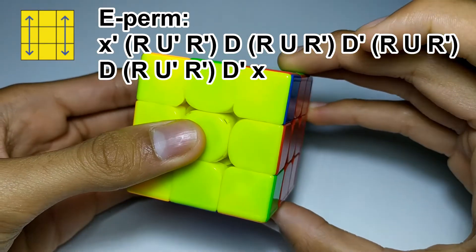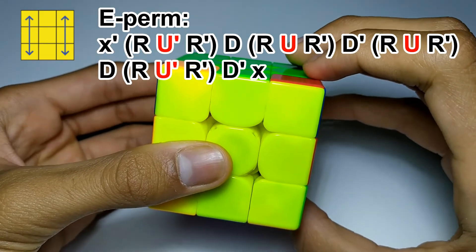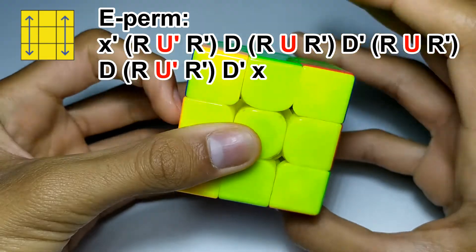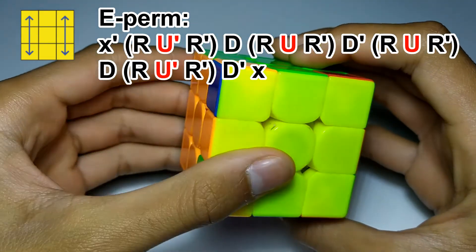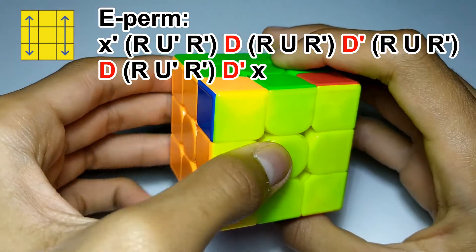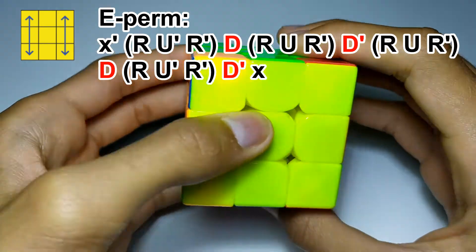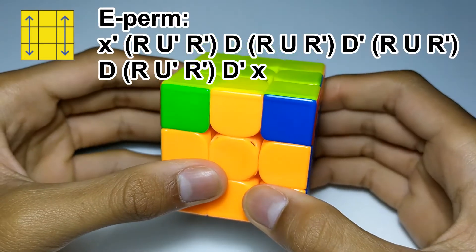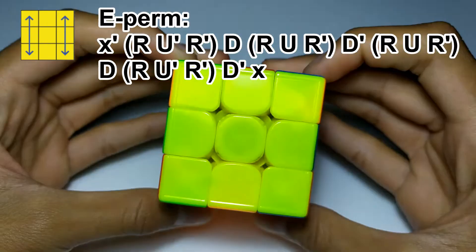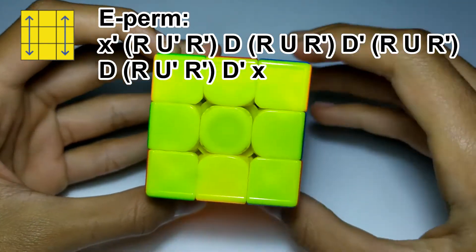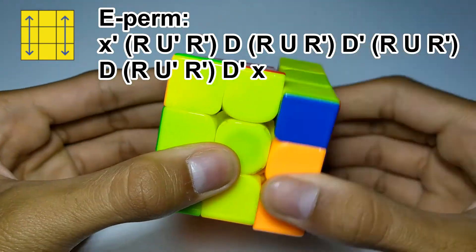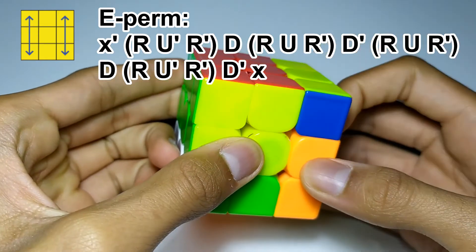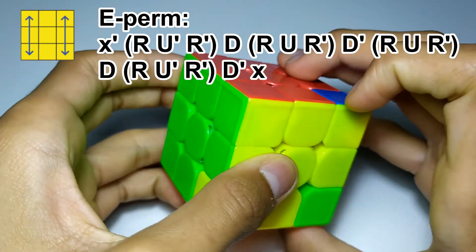So the way I remember it is that the U moves go U', U, U, U', and the D move just alternates D, D', D', D', D'. So once you're holding it in the correct position the way you do this algorithm is you start with your cube rotation and then you do R, U', R', D', R, U', R', D', push.